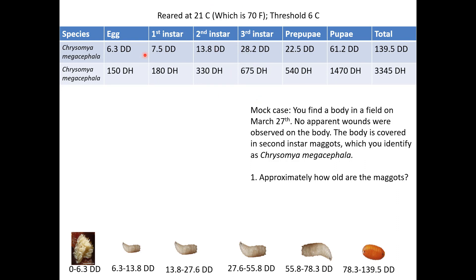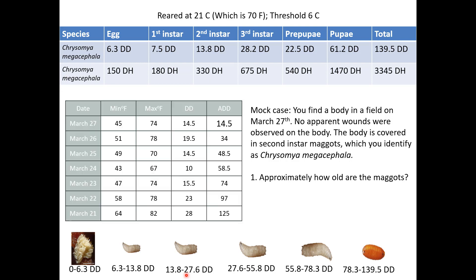You know the temperature it's reared at, its threshold, how many degree days and degree hours it takes to go through all the different stages — egg, first instar, second, third, pre-pupa, pupae. So you find the body March 27th, no apparent wounds, body covered in second instar maggots. You're looking for the second instar range: 13.8 to 27.6 degree days. Since you've done it before, all you have to do is look up those numbers. Then pull the temperature data — what is the max and min temperature during that time period? Average temperature minus threshold times unit at a time gives your degree days, with accumulated degree days over here.